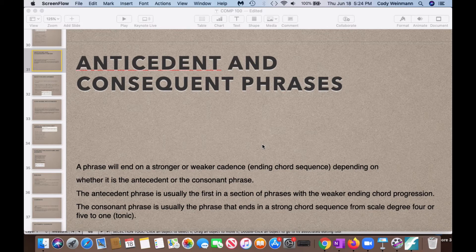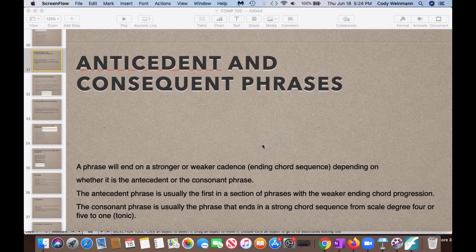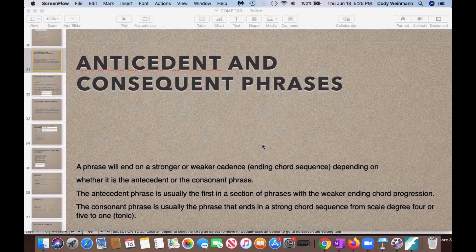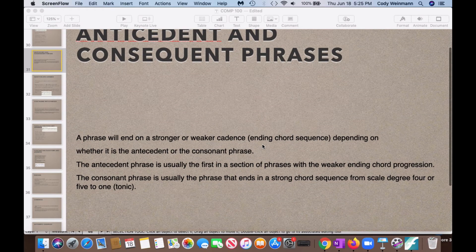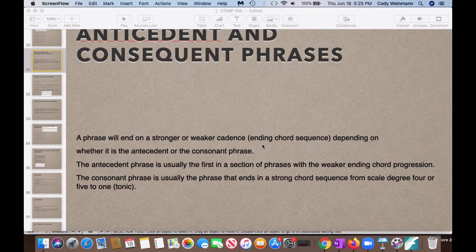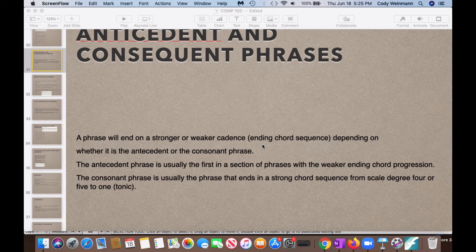The consequent phrase is actually the phrase that ends in a strong chord sequence from scale degree number four or five to tonic. So you can have one that goes, that's five seven, going to one. You can have it just like that. That's that last part of that phrase. Okay, so that's your antecedent and consequent phrases.